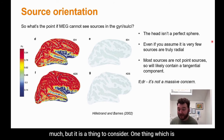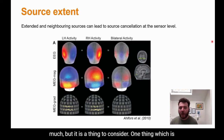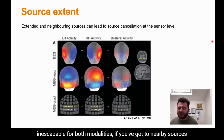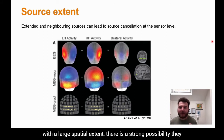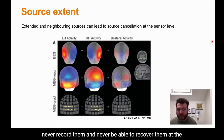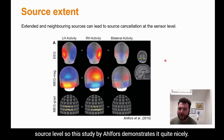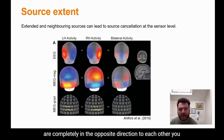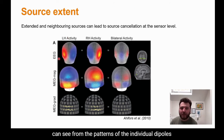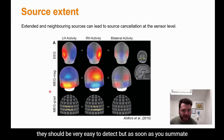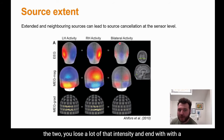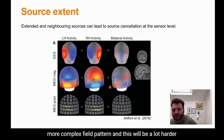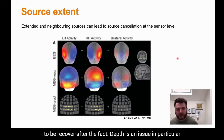One inescapable limitation for both modalities is source cancellation. If two nearby sources with large spatial extents have opposite orientations, they can cancel out at the sensor level and cannot be recovered at the source level. A study by Alphar demonstrates this: two sources near the midline pointing in opposite directions individually produce clear field patterns, but when summed they lose much of their intensity and produce a more complex, harder-to-recover field pattern.